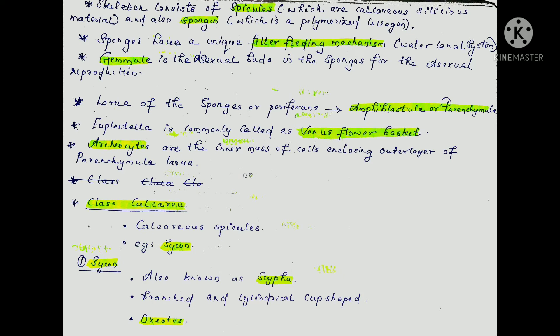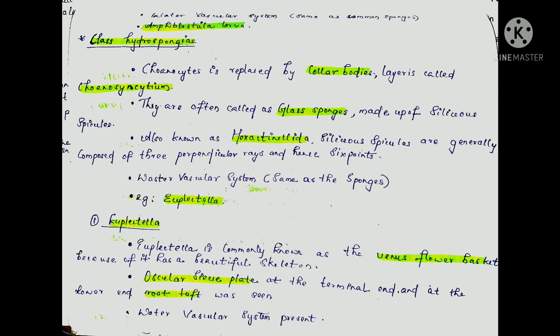The Porifera classes: first is Calcarea. In the class Calcarea, the spicules are calcareous spicules. The example is Sycon. Sycon has a cup-shaped cylindrical body. The spicules in Sycon are Oxeotes. They have a water-vascular system with ostia and a filter-feeding mechanism.